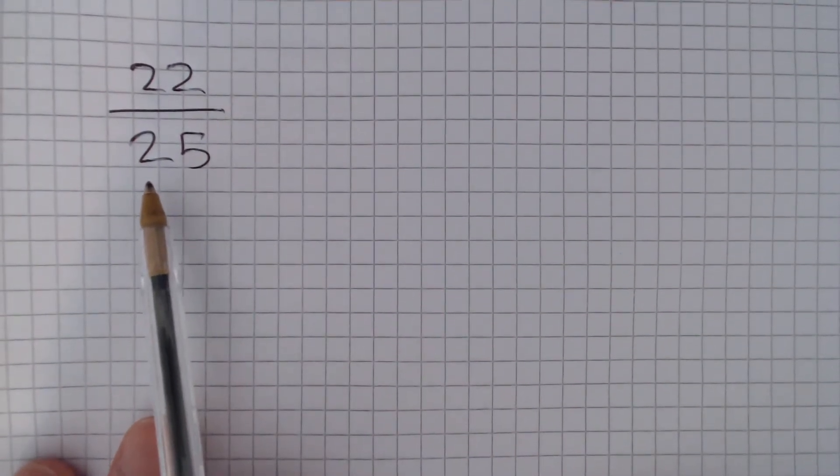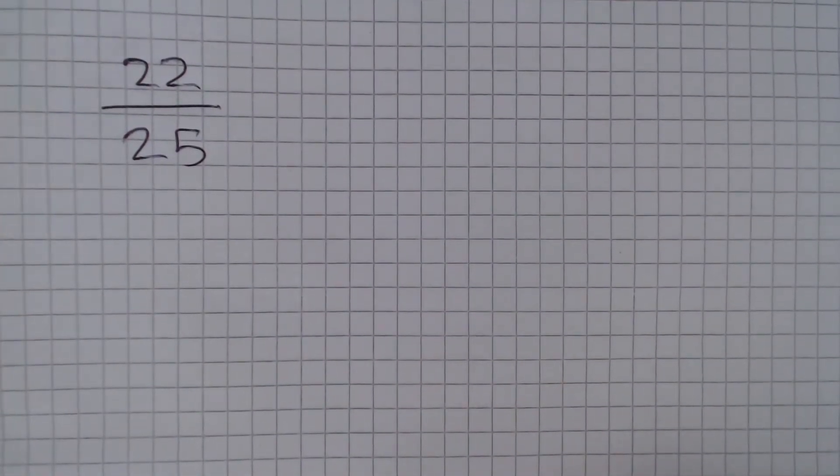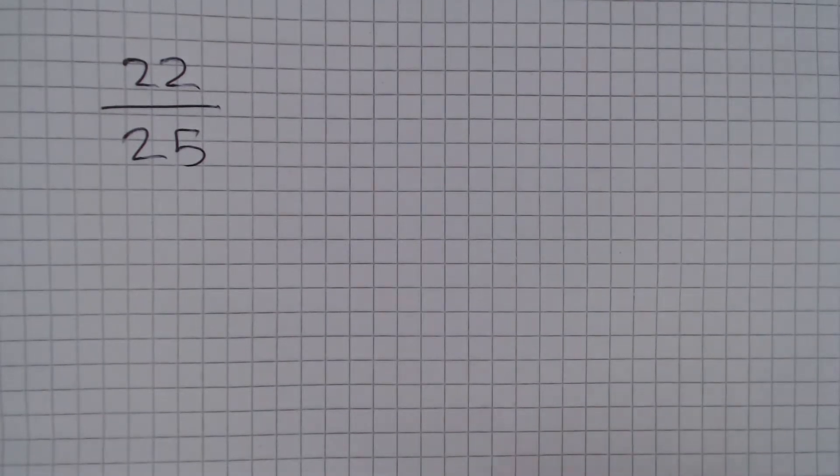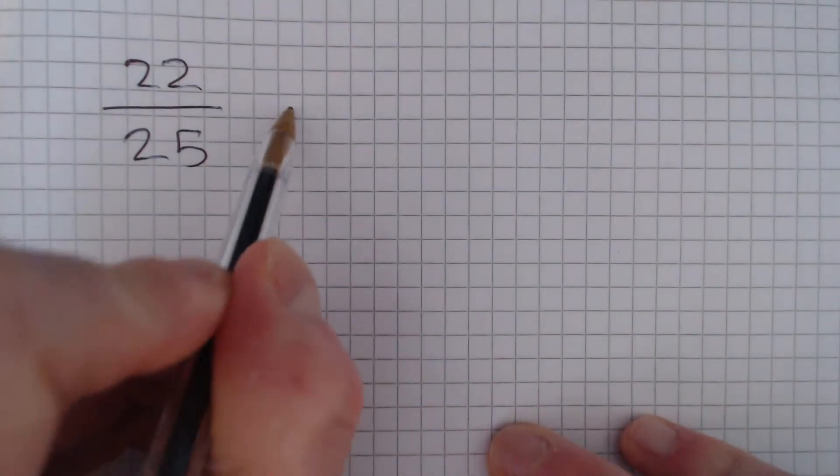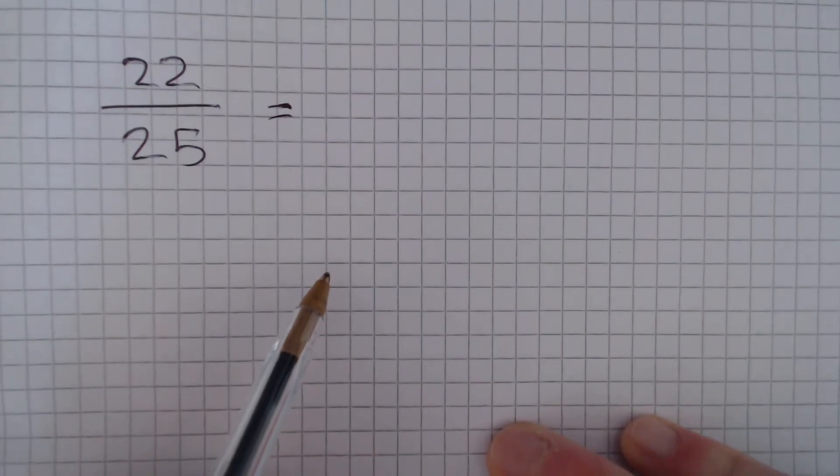Notice how the denominator is a 25. And we know that 4 times 25 is 100. So let's multiply the top and bottom of this fraction by 4.